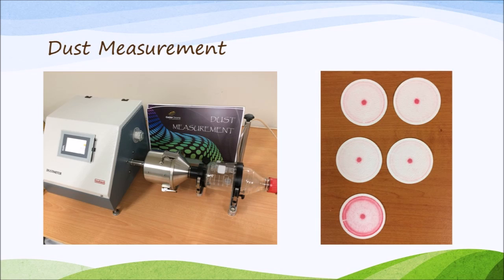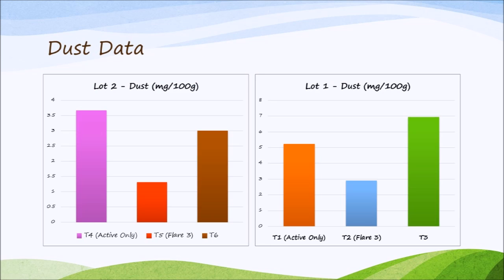Some of the data that you will get from this is shown here as an example. There are two graphs for two different seed lots. The bars on the left show the active only, so you can see the typical dust that you will get. The middle bar represents one of the polymers that we developed here at Central Oceania — it's our Flare 3 product — and you can see the reduction of dust by using the actives and the polymer in combination.